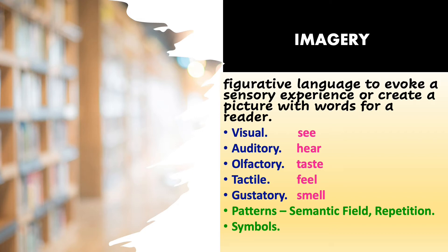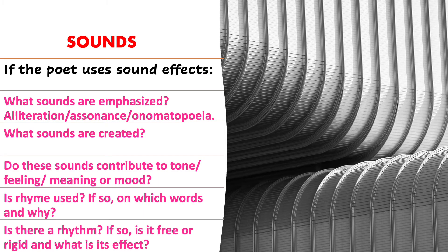Then comes imagery — the figurative language used to evoke a sensory experience or create a picture with words for a reader: what you see, hear, taste, smell, and feel. Also note if there are patterns such as semantic field or repetition, and finally if there are symbols used. Some poets use sound effects that contribute to tone, feeling, meaning, or mood — these are alliteration, assonance, and onomatopoeia. Also analyse if there is a rhythm used, whether it's free or rigid, and what its effect is.